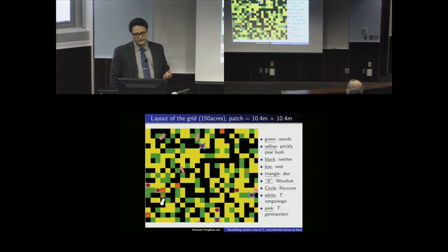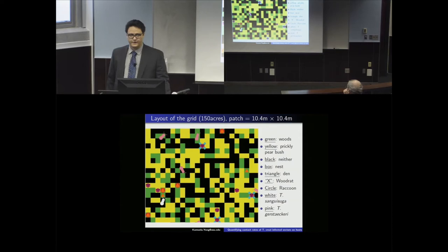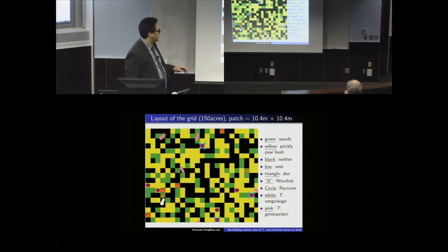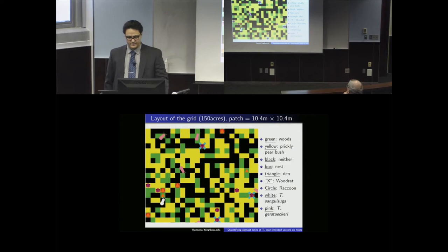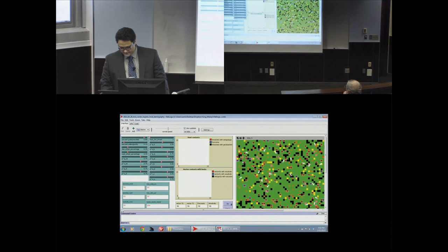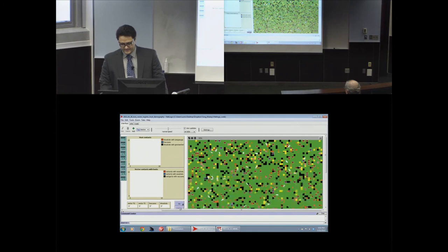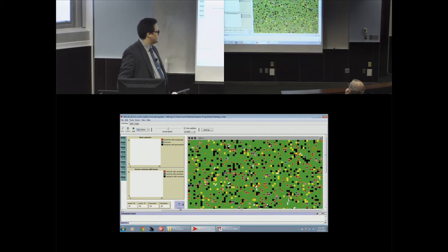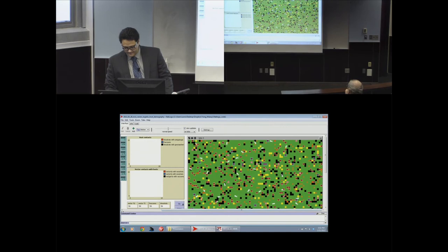We set a fixed percentage of the grid to be wooded area — say 30% — and another fixed percentage to be prickly pear, with the remainder being neither. Each simulation run randomly generates the patch layout, so the environment looks different every time. For instance, if 80% of patches are wooded area, you see far more woods, but the layout changes each run while maintaining the same percentages.